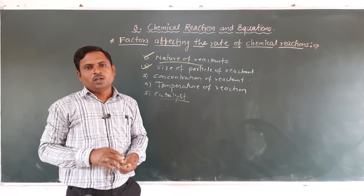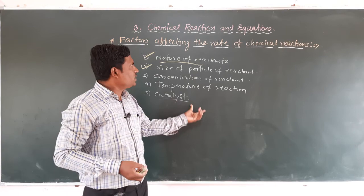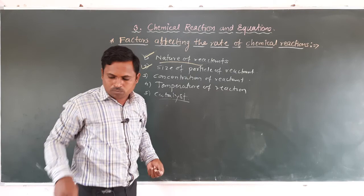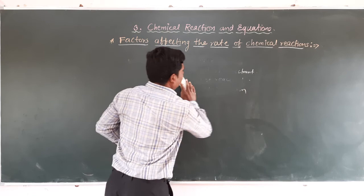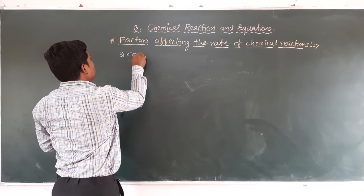We discussed how those factors affect the chemical reaction. Today we have three remaining factors that affect the rate of chemical reaction. The first of today's factors is the concentration of the reactant.